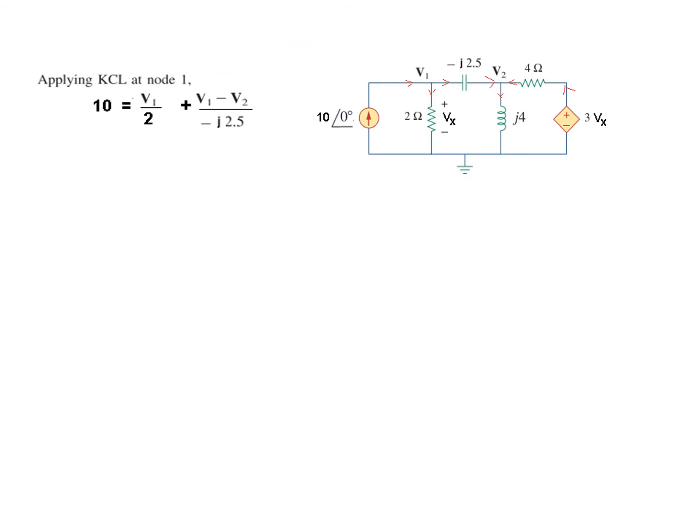So now we are ready to write the current equation of KCL at node 1. You can see this is the current entering so 10 ampere, we have marked the directions so this current is going down, this is moving to the right, so current entering 10 ampere is equal to this current which is V1 over 2, so V1 over 2 and the right current is V1 minus V2 divided by this impedance that is minus j 2.5.